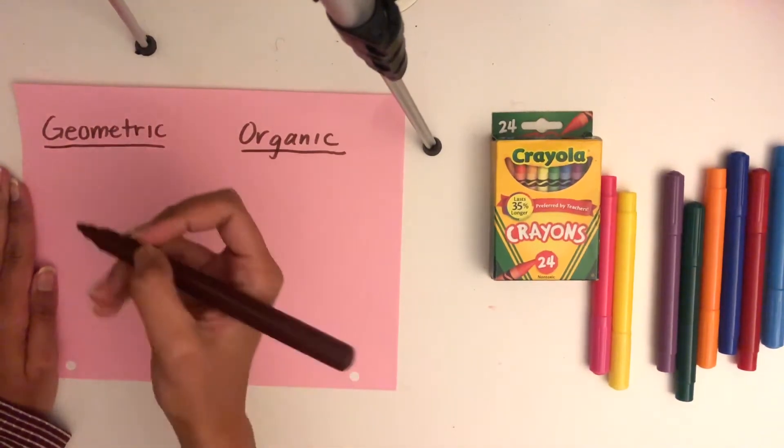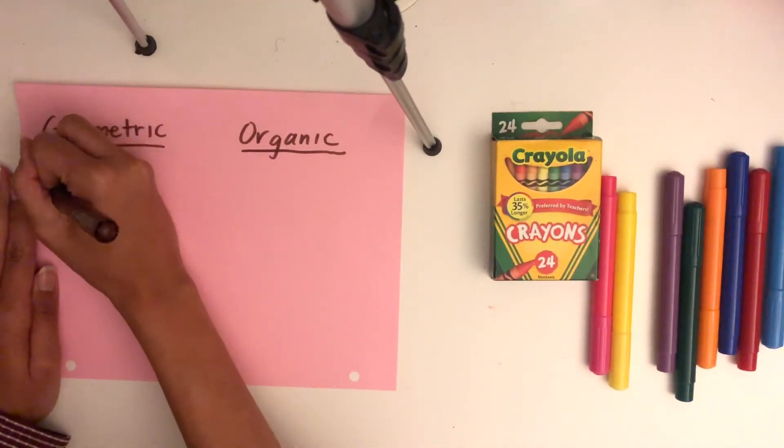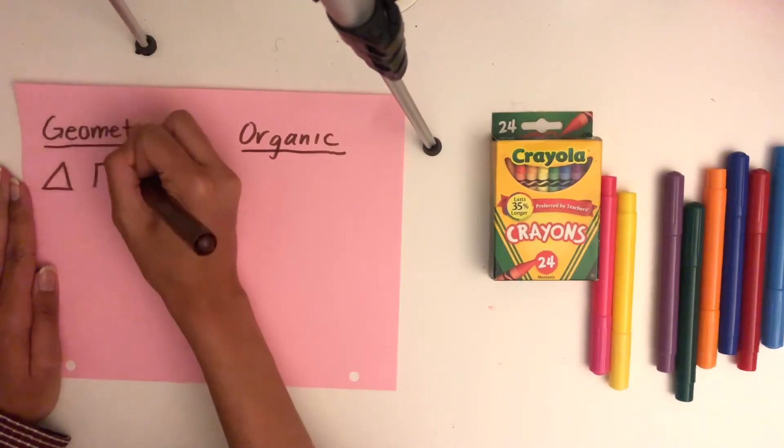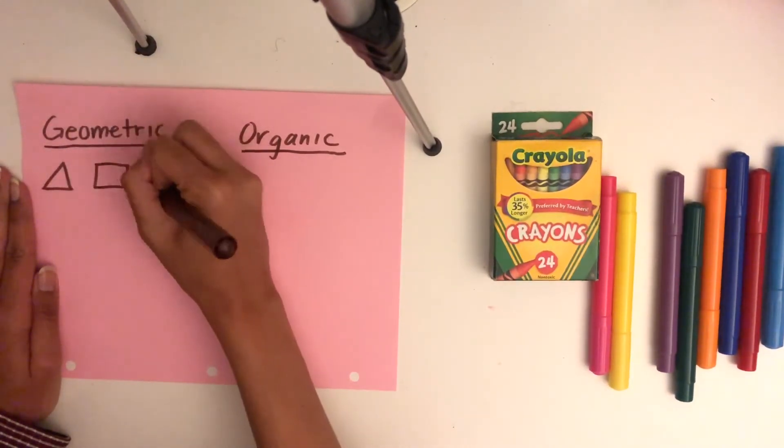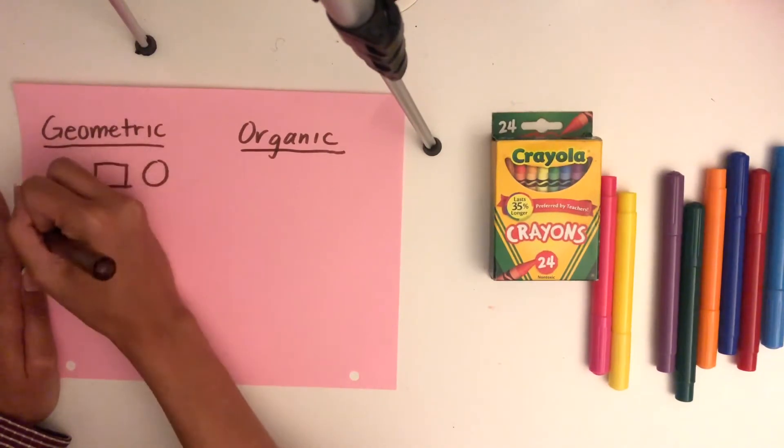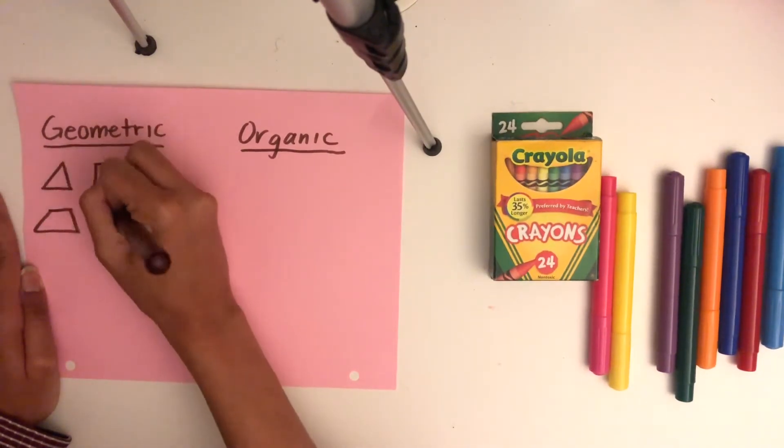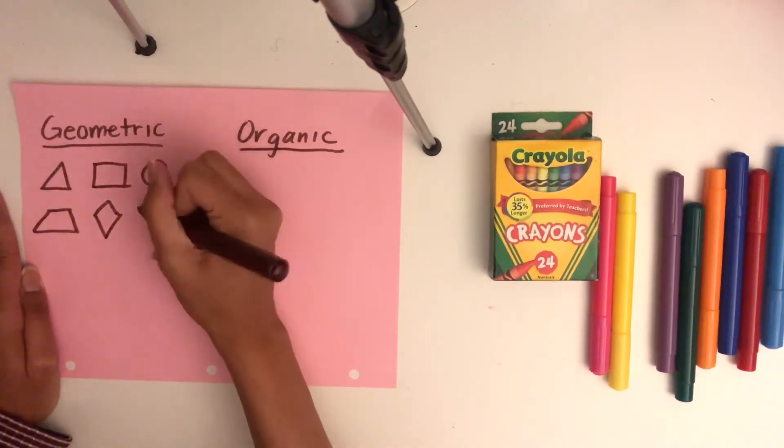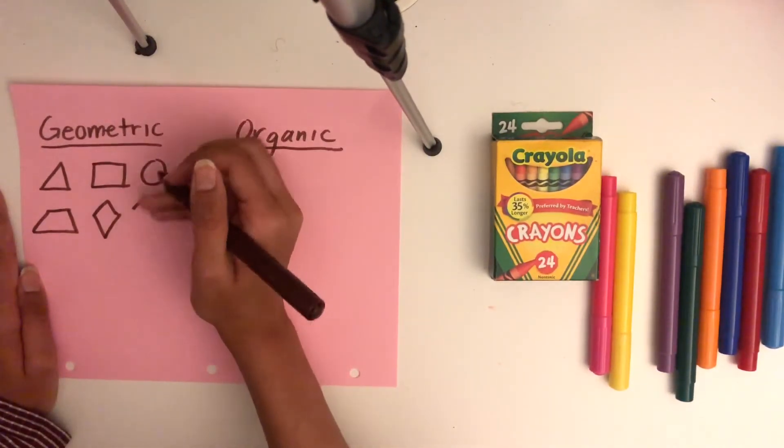So we're going to go over some shapes that we may use in our drawing later. Some geometric shapes are a triangle, a square, a circle, a trapezoid, a diamond, and an octagon, which has eight sides.